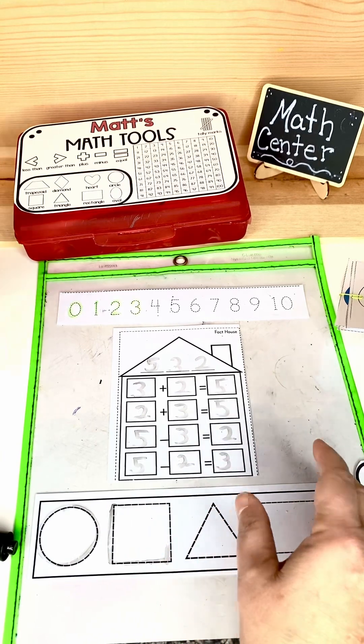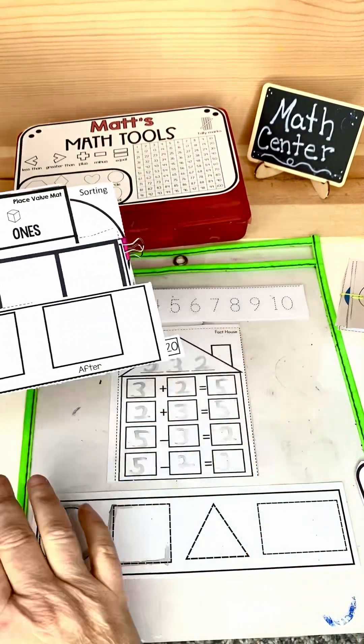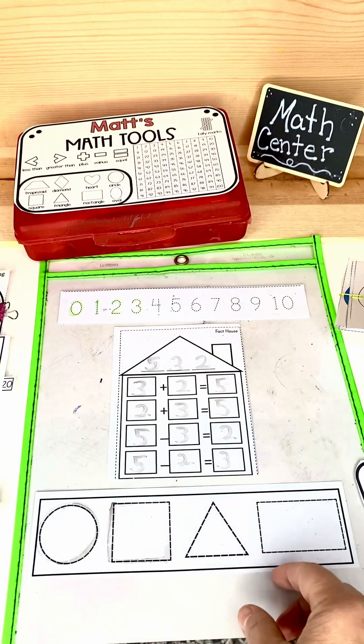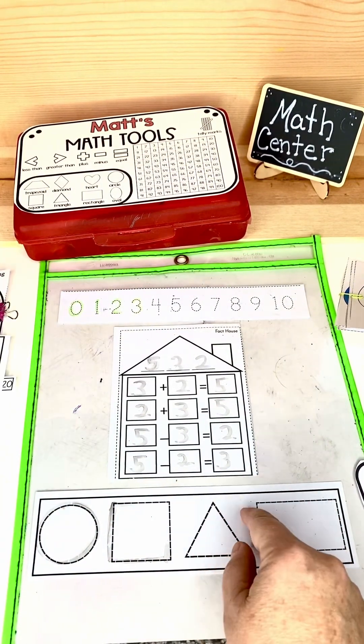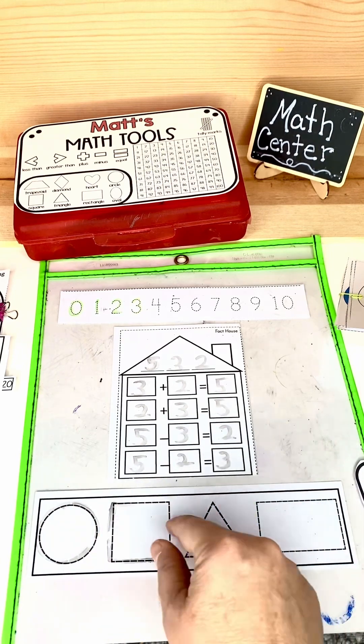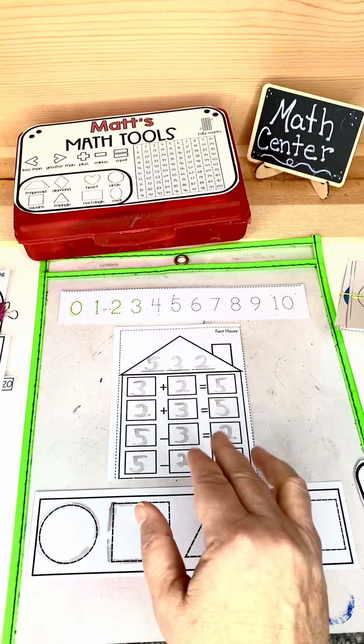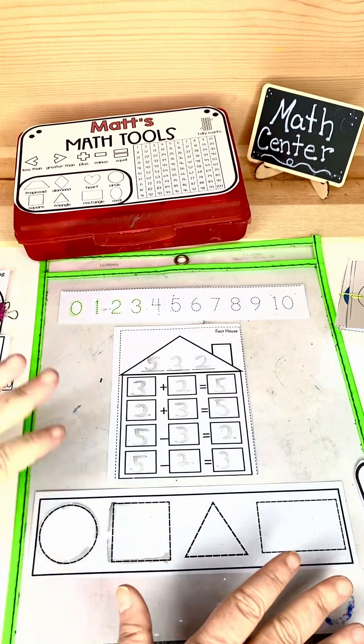Now I like to laminate all of mine so that the kids can write right on top of it with their dry erase marker. But you could also, if you don't want to laminate them, you can put them inside of one of these plastic folders so that the students can write their items on top. They can change things in and out.